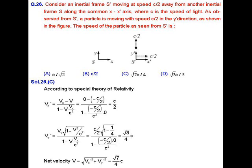That implies v_x prime equals c by 2. Similarly, the velocity of particle along y axis in the moving frame of reference, that is v_y prime, equals v_y square root of 1 minus v square upon c square upon 1 minus v times v_x upon c square, where v_y is the velocity of the particle in the rest frame of reference.